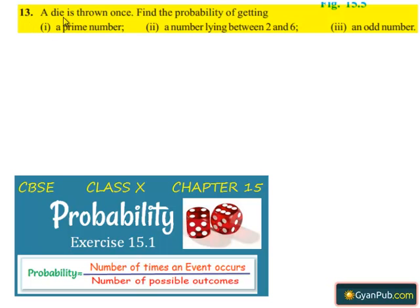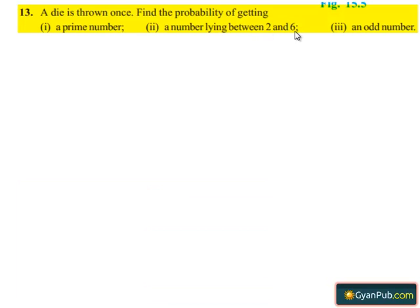Let us read the thirteenth question. A die is thrown once. Find the probability of: first, a prime number; second, a number lying between 2 and 6; third, an odd number.